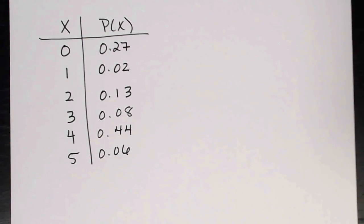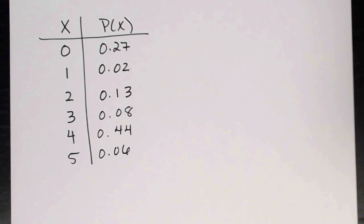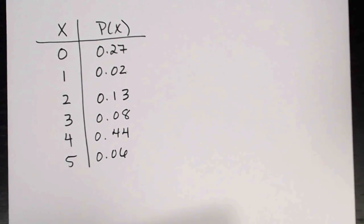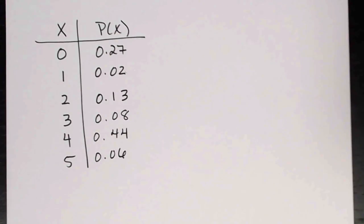In this video, we're taking a look at how to use the TI calculator to calculate the mean and standard deviation of a probability distribution. This will be for the old operating system. For the new operating system, the instructions are just a little bit different, but this should at least get you started. You can take a look at the calculator packet for the new operating system instructions.